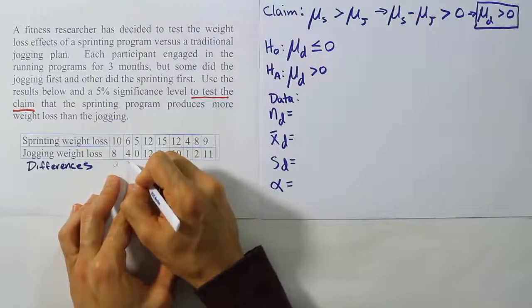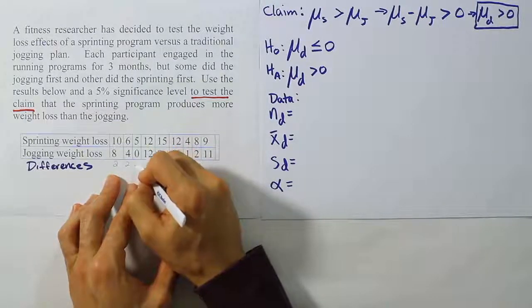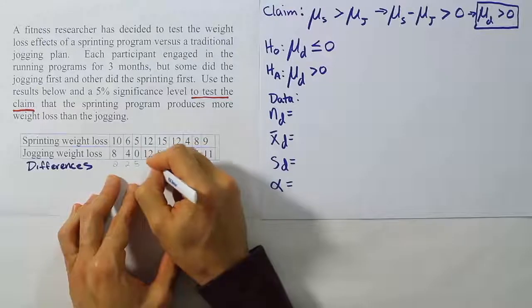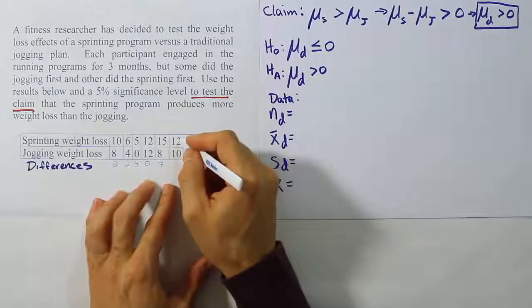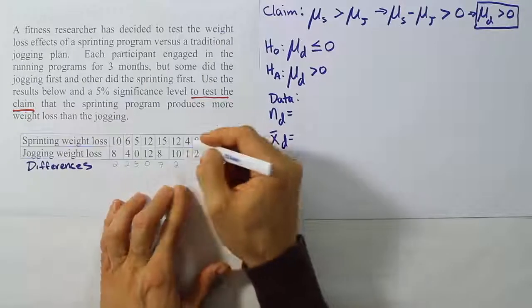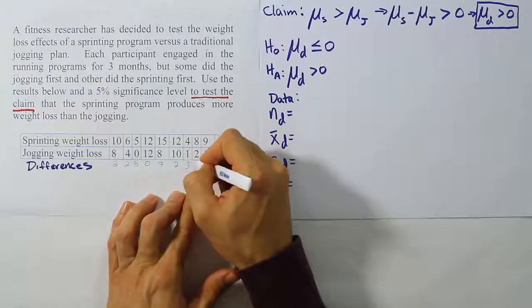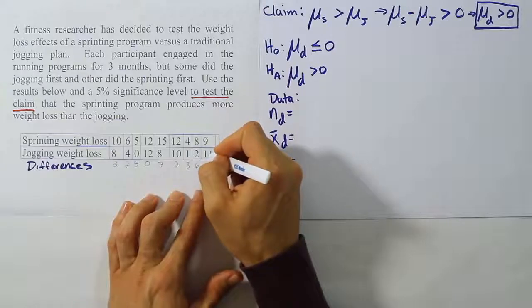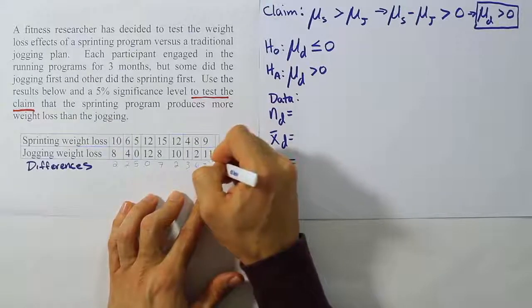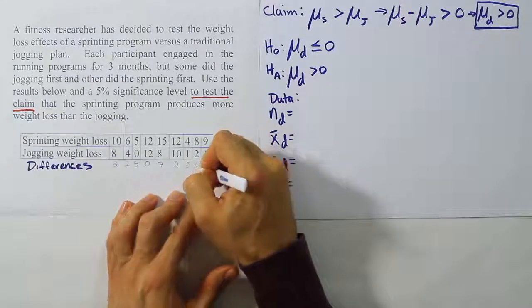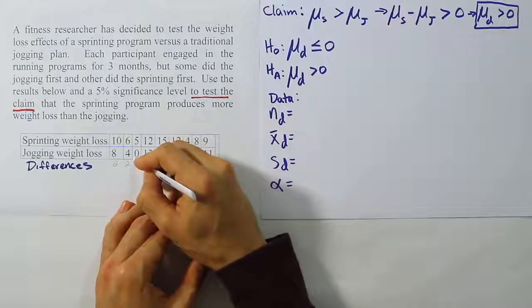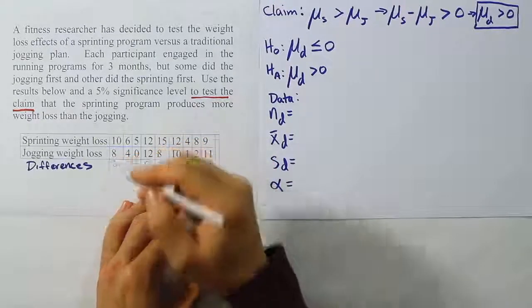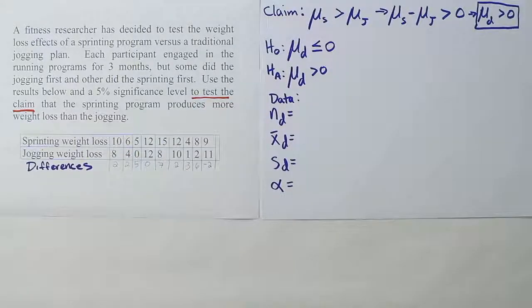6 minus 4 is 2, 5 minus 0 is 5, 12 minus 12 is 0, 15 minus 8 is 7, 12 minus 10 is 2, 4 minus 1 is 3, 8 minus 2 is 6, 9 minus 11 gives a negative 2. That difference is negative because the bottom number was bigger than the top number. So that's my little row of differences.